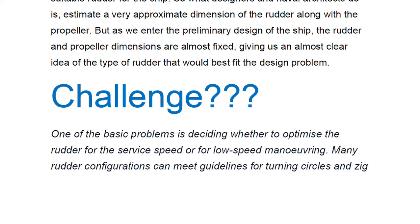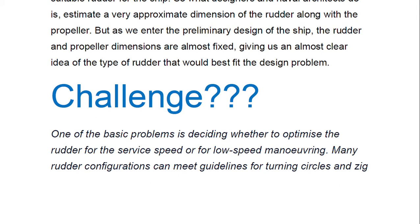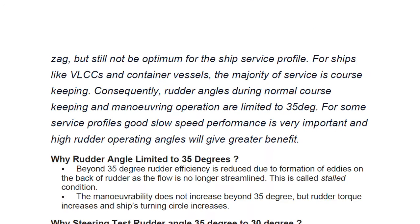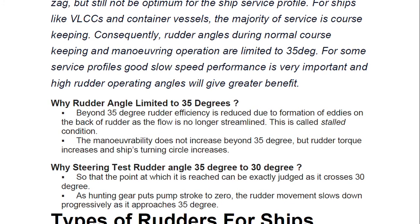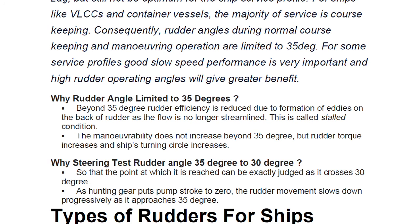One basic design challenge is deciding whether to optimize the rudder for service speed or for low-speed maneuvering, especially given current slow-steaming trends. Many rudder configurations can meet guidelines for turning circles and zigzag maneuvers but still not be optimum for the ship's service profile. For ships like VLCCs and container vessels, the majority of service is course-keeping, so rudder angles during normal operation are limited to around 35 degrees, as these bigger vessels maintain course rather than turning frequently.